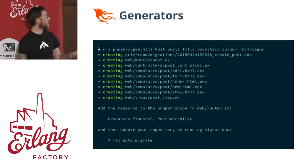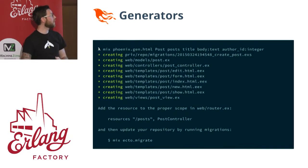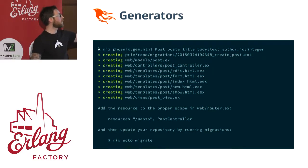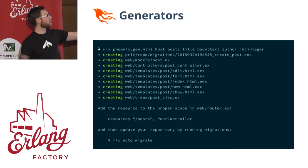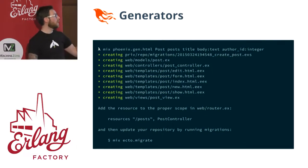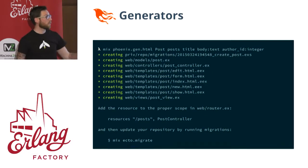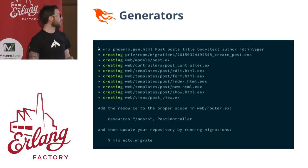If we wanted to create a blog, we would create a Post model. It's mix phoenix.gen.html and we give it the model name — Post — and then the table name, which is the pluralized form of the model. We give it the properties: a title which defaults to a string, a body of type text, and an author_id which is an integer.